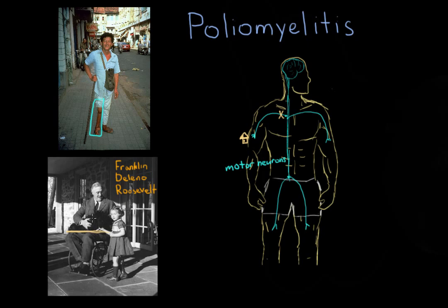Though he was diagnosed with polio, it's now believed he was misdiagnosed and that his symptoms were actually caused by Guillain-Barré syndrome. This would mean his diagnosis of polio may have been one of the most prominent misdiagnoses in history. There are two distinct reasons we believe he may have had Guillain-Barré syndrome.